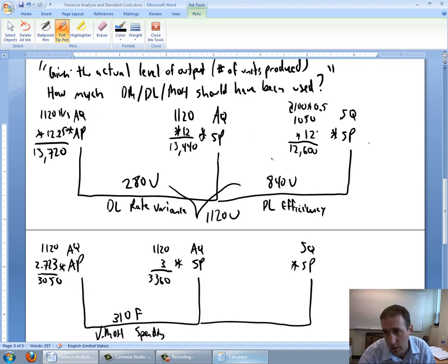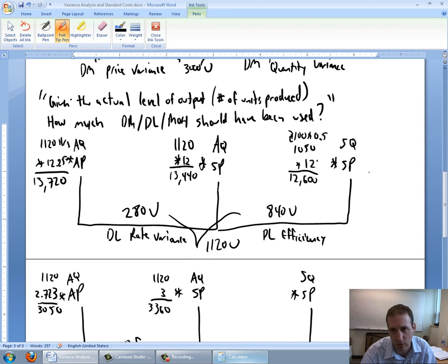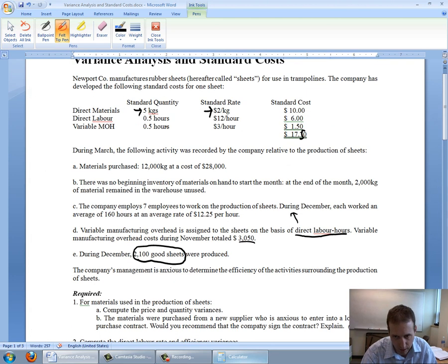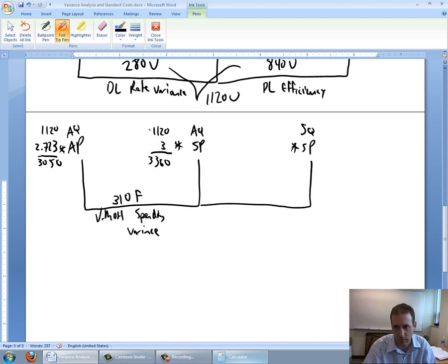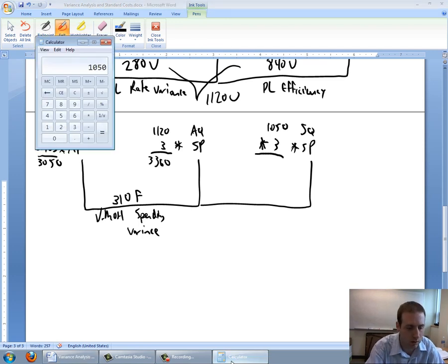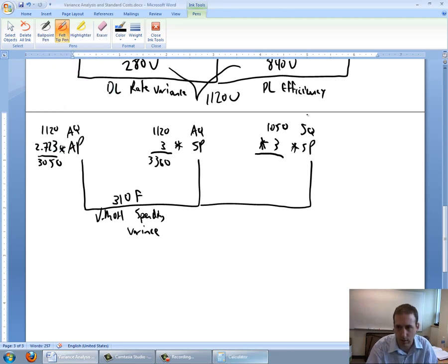On to my last prong here. My standard quantity, I'm using direct labor hours as the driver. Again, 2,100 sheets made. I got to answer the question, given the actual level of output, how much in this case labor hours should have been used? Well, it should take half an hour. I made 2,100 units. That means 1,050 hours, the same SQ as was in place for labor. My standard price is 3. 1,050 times 3, 3,150. 3,150 compared to 3,360 is 210. I'm going to say is this favorable or unfavorable? I actually took 1,120 hours. I should have taken 1,050. I used too many hours. This is an unfavorable variable overhead efficiency variance.